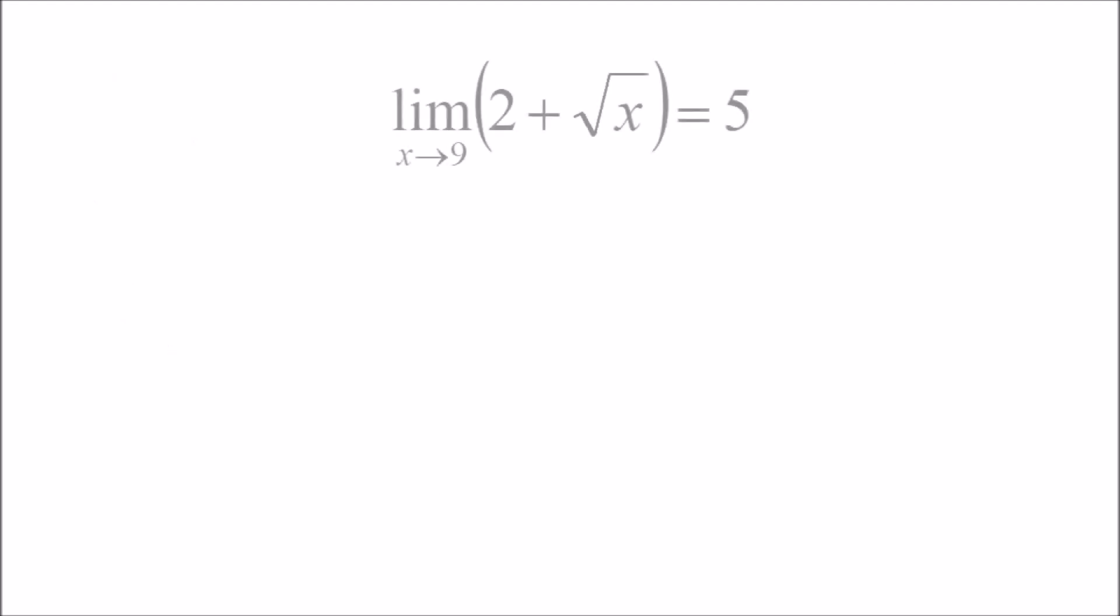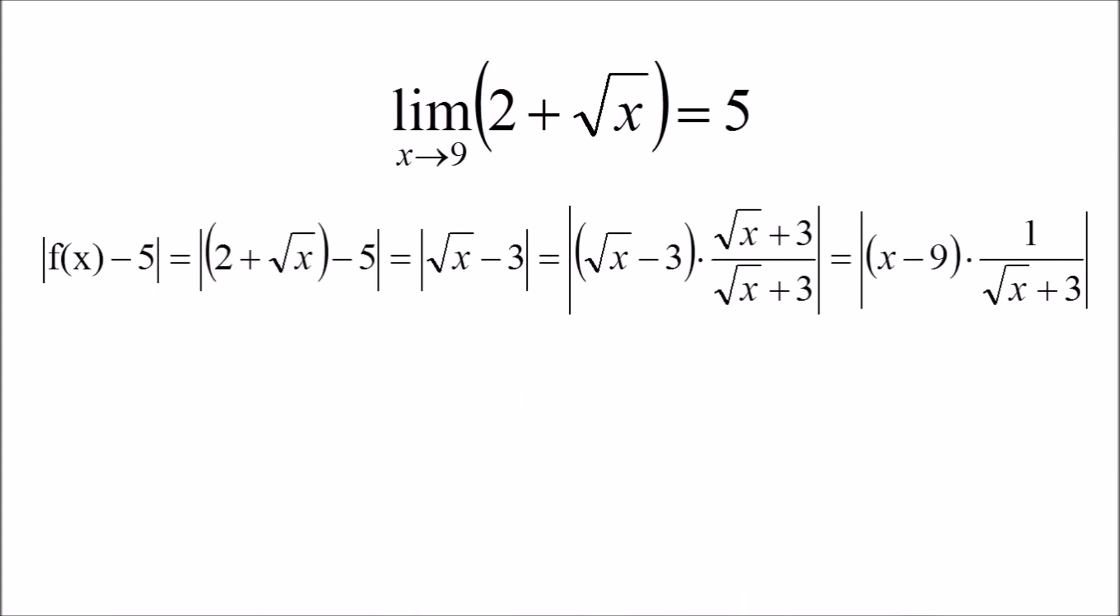Here's an example. The limit of 2 plus the square root of x equals 5. To prove this, we go in three steps. First, manipulate the epsilon inequality into a form with the delta inequality term x-9. To do that, we need to multiply by a conjugate factor.